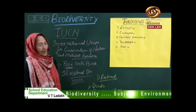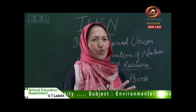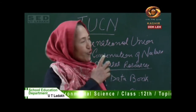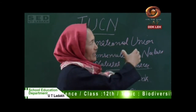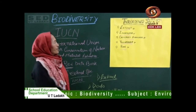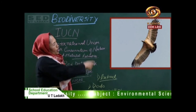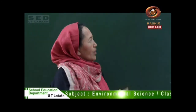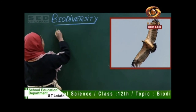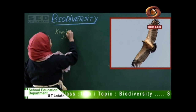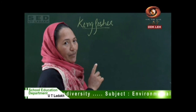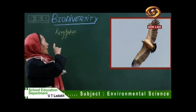Endangered species are those species whose numbers have been reduced to a critical level. If not preserved or conserved right now, these species may come under the extinct category. For example, this is a picture of the long-billed Indian vulture, which is on the endangered list. The second example is the kingfisher. There are many, but I just listed two: the long-billed Indian vulture and kingfisher.